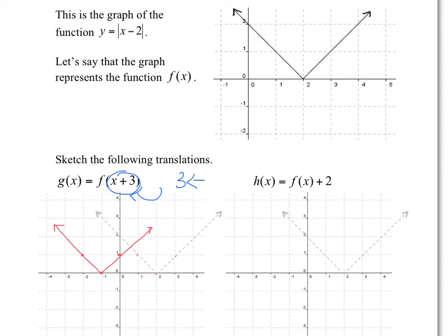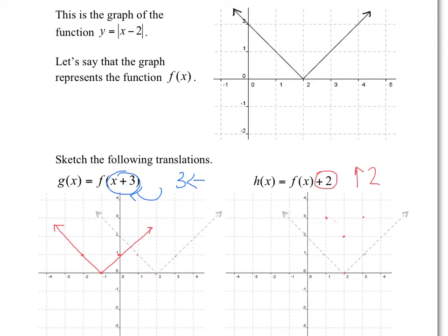For the second transformation, we're making another change on the original graph. This time, notice this plus 2 is outside the bracket — that's going to affect the vertical translation, making it go up 2. Notice that inside the bracket it did the opposite: we went 3 left even though it said plus 3. Here, plus 2 means we go up 2. You take each point of the original graph and move it up 2, and that's your final graph.